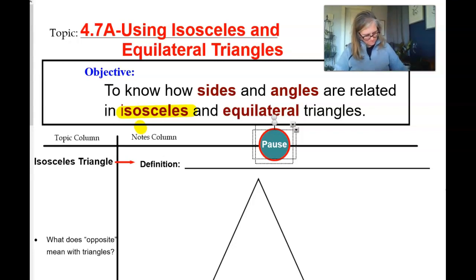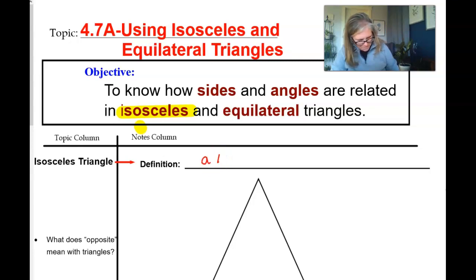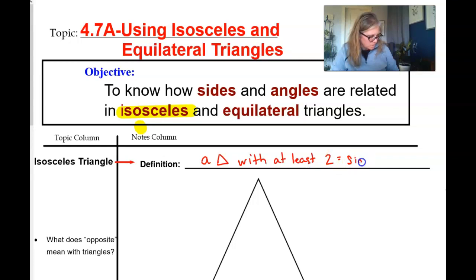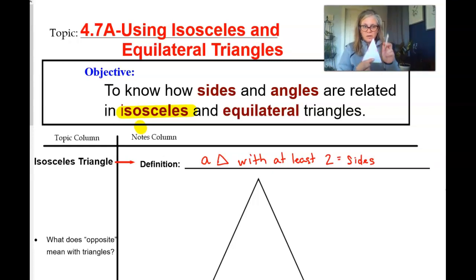Go to your notes and let's write the definition of an isosceles triangle. An isosceles triangle is a triangle with at least two equal sides. That does mean that an equilateral triangle, which actually has three equal sides, falls into the isosceles category. But we are specifically going to be talking about triangles in this video that just have two of the sides that are equal.